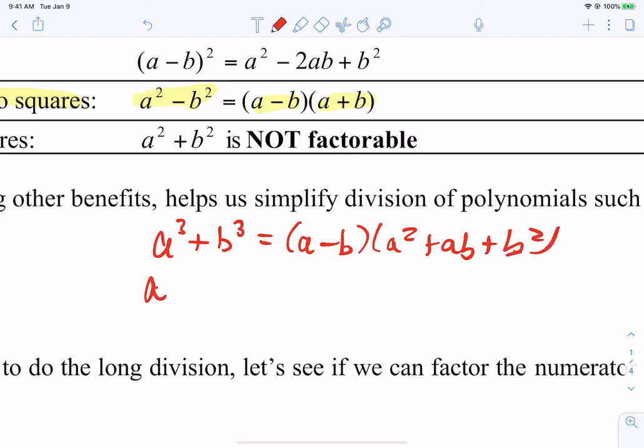If you have A cubed plus B cubed, it does factor to be A plus B times A squared minus AB plus B squared. And you can also factor A cubed minus B cubed, which is A minus B times A squared plus AB plus B squared. So those three formulas that you see here, the A squared minus B squared, A cubed plus B cubed, A cubed minus B cubed are formulas that you should know. So please make sure you write those down.